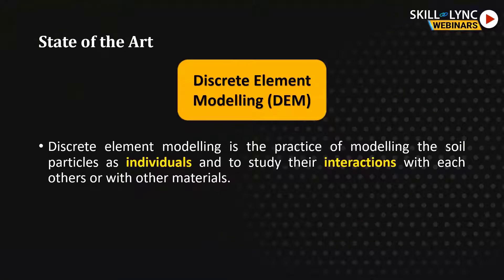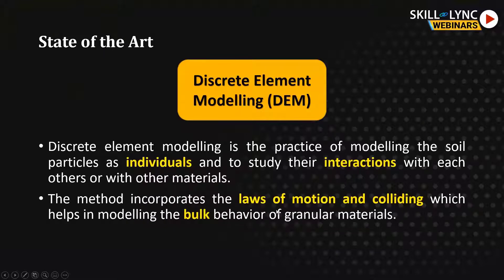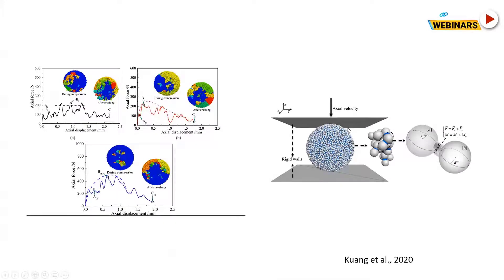Discrete element modeling is the practice of modeling soil particles as individuals and studying their interactions with each other or with other materials. The method incorporates the laws of motion and collision, which helps in modeling the bulk behavior of granular materials. You can see particles formed by a combination of smaller particles bonded together by cement or any kind of stabilization. After applying load, you can analyze the behavior of the material and the crack formations during compression and crushing — for different sets of material properties.